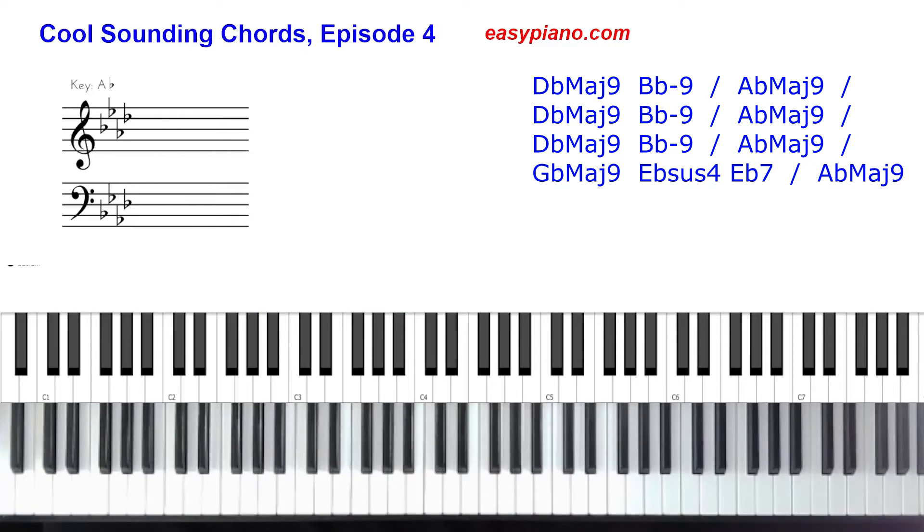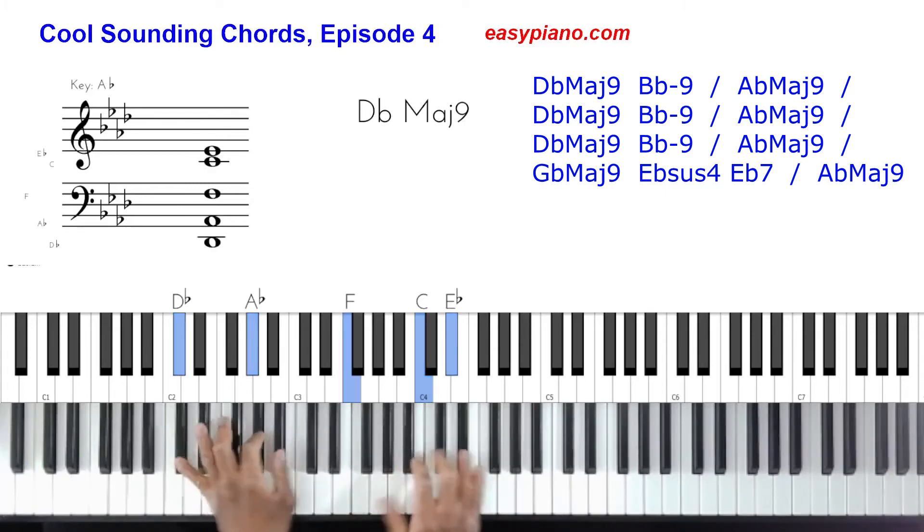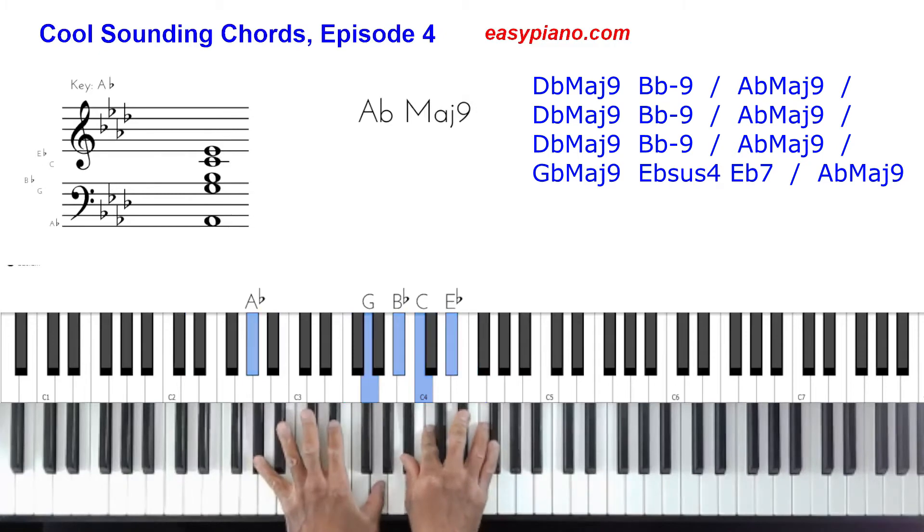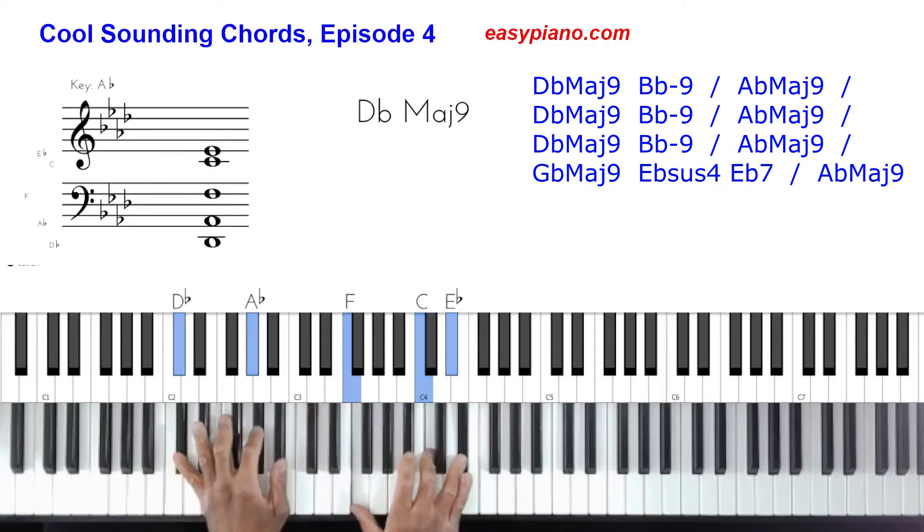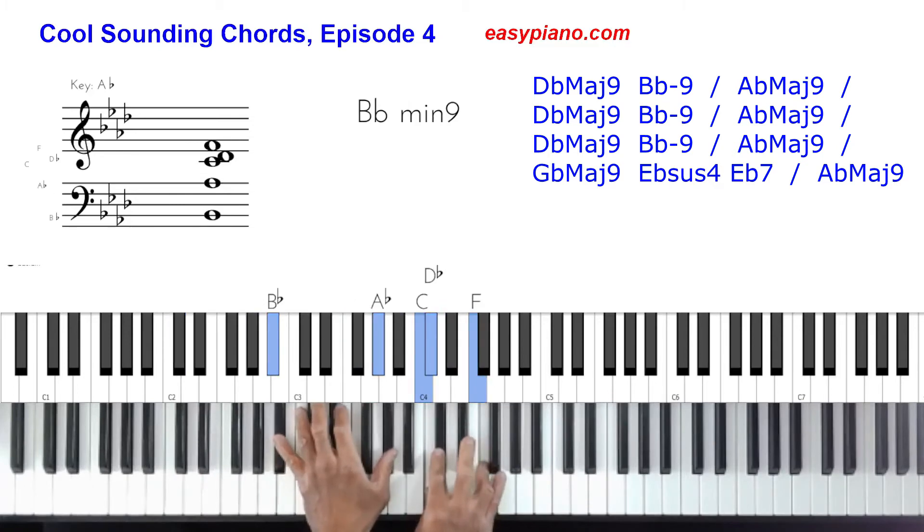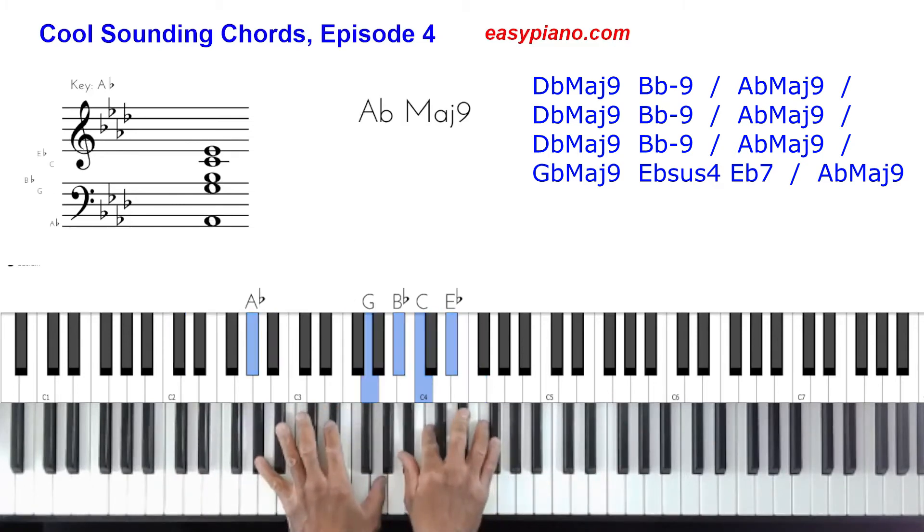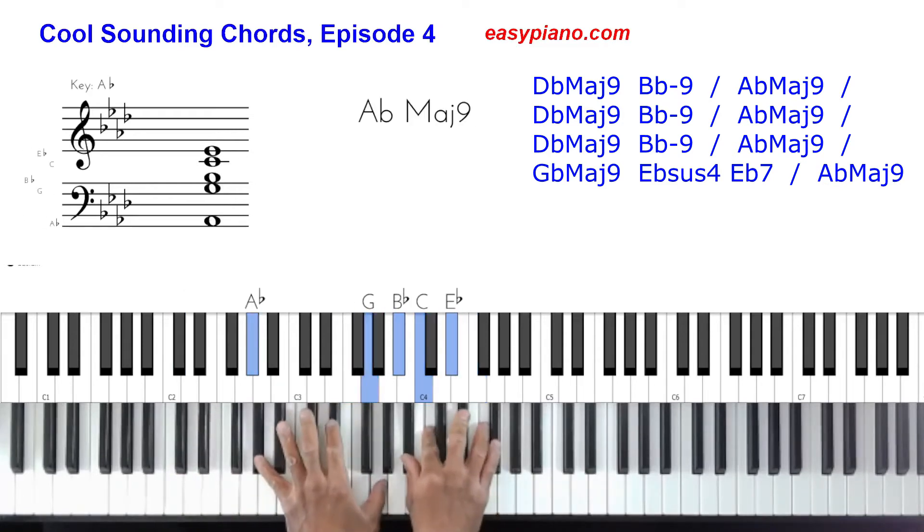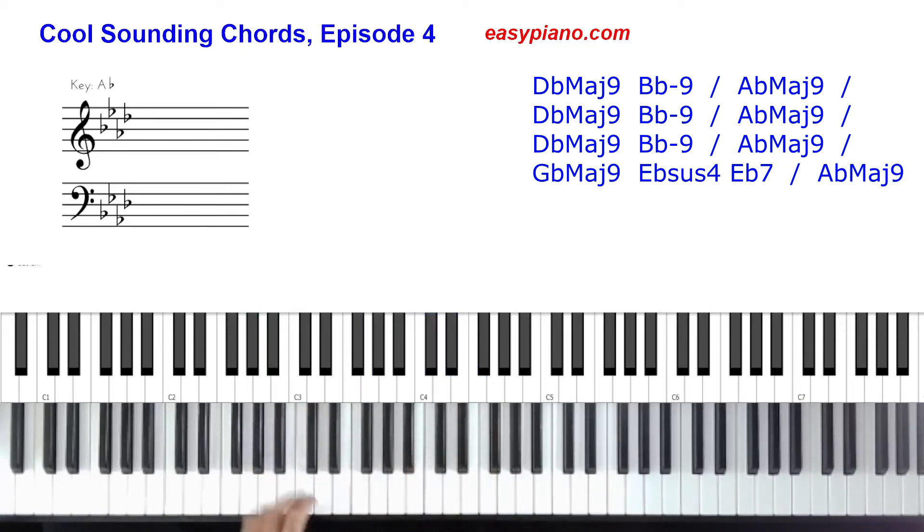So let's go ahead and do that three times. Here we go. One, two, three, four. Two, three, again. Two, three, one more time. Two, three, four. And then the next section, what we're going to do is we're going to play a G flat major nine.